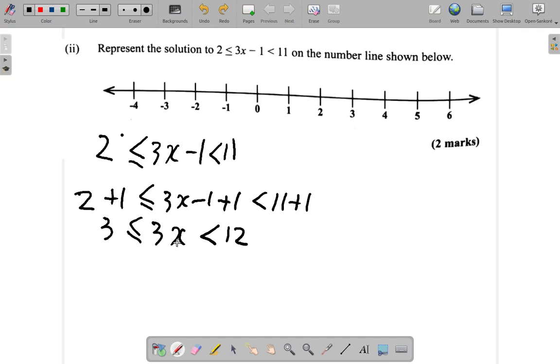After that, I divide by 3. If I divide all three sides of this inequality by 3, this becomes 1, this is less than or equal to x is less than 3 into 12, 4.